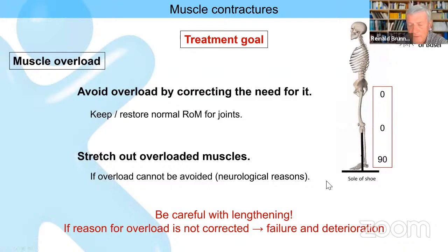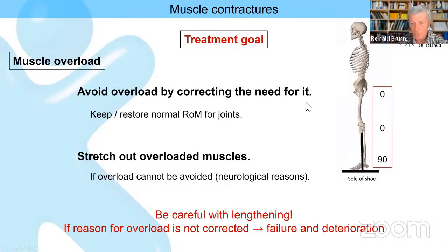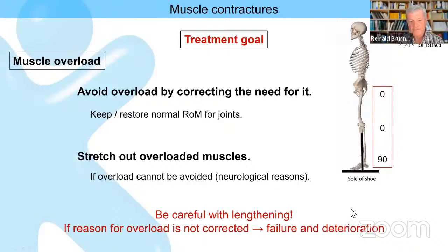The closer we get to the 0-0-90 position in standing and mid stance, the less we overuse our muscles. That is one reason why you need to get to this position. But be careful with lengthening of hamstrings and even rectus.